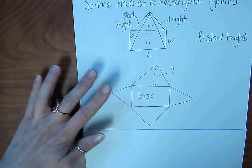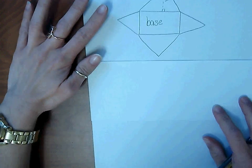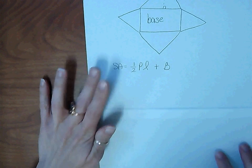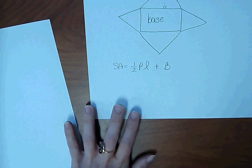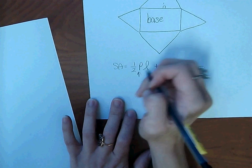But if you have a formula sheet, or you can remember the formula easily, surface area equals one-half PL plus big B. P being the perimeter of the base shape.